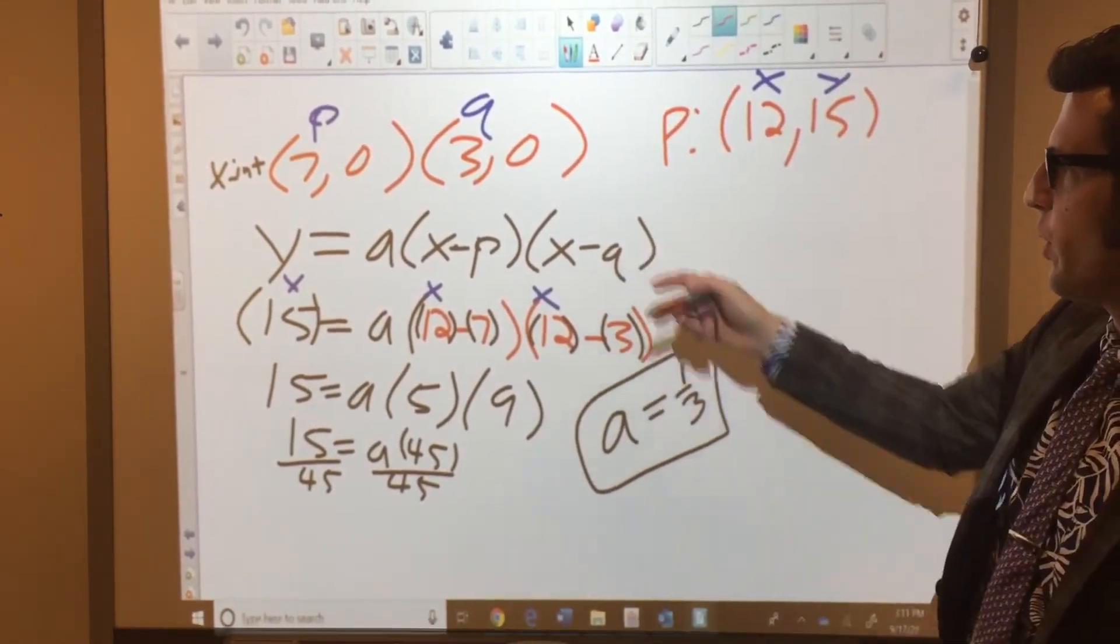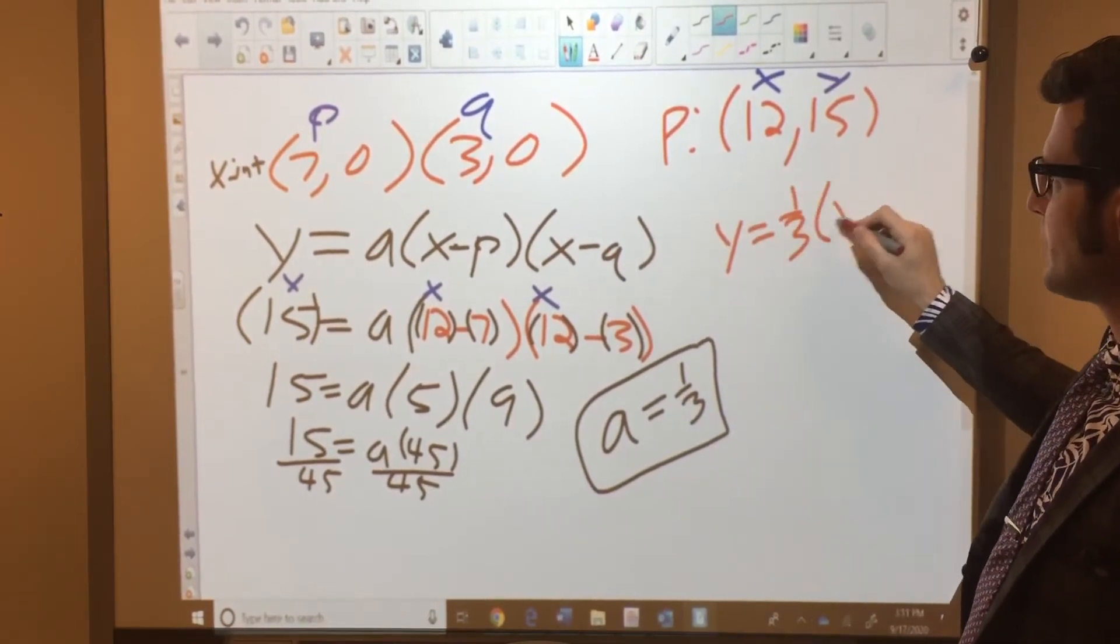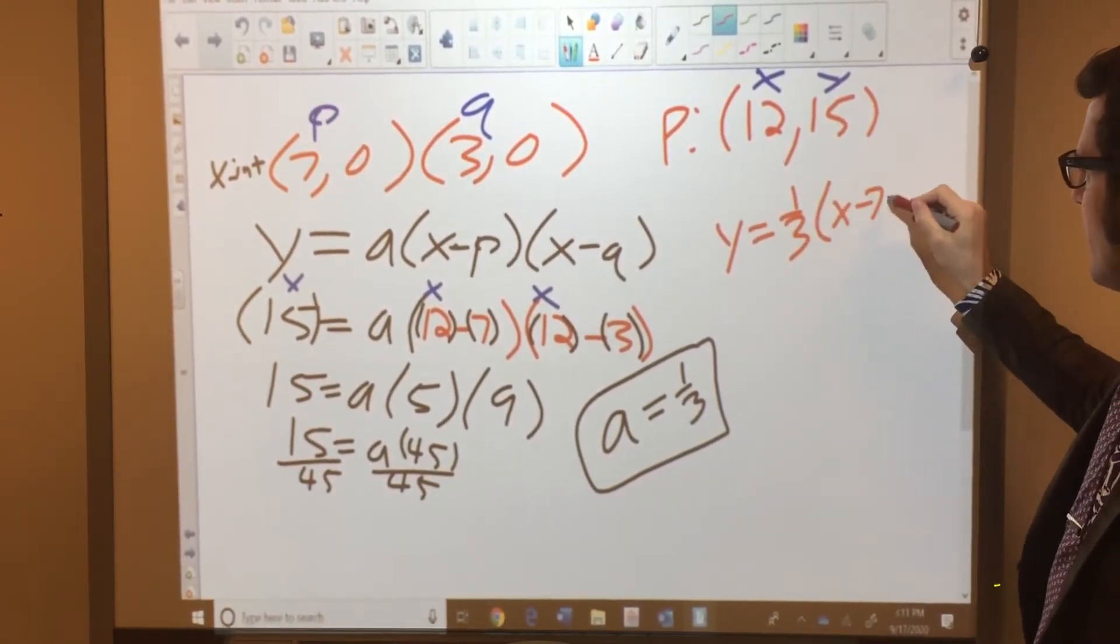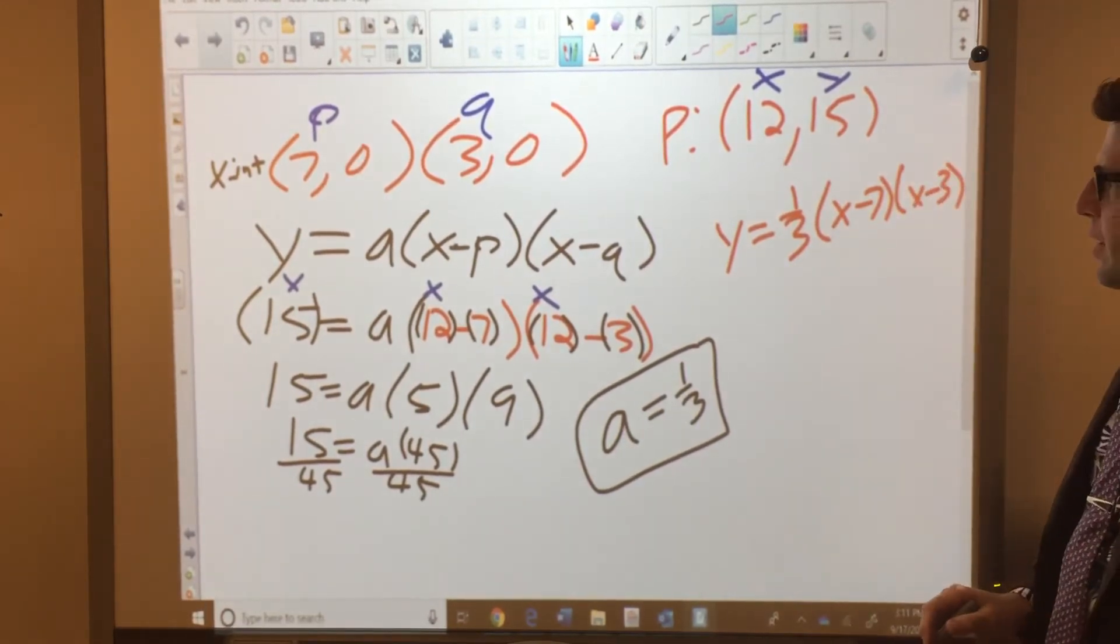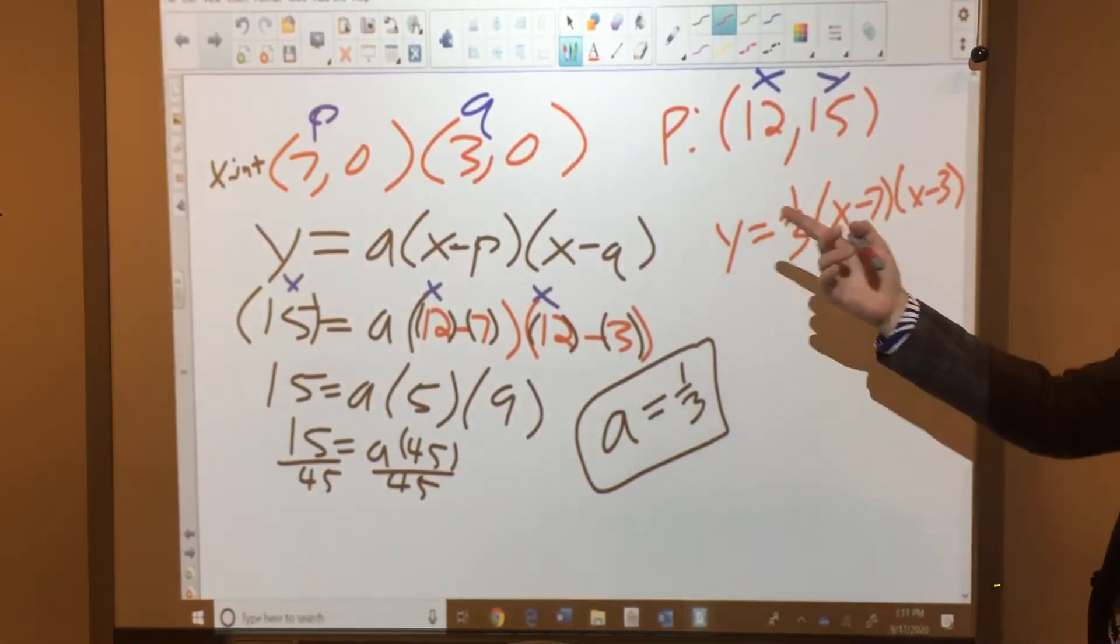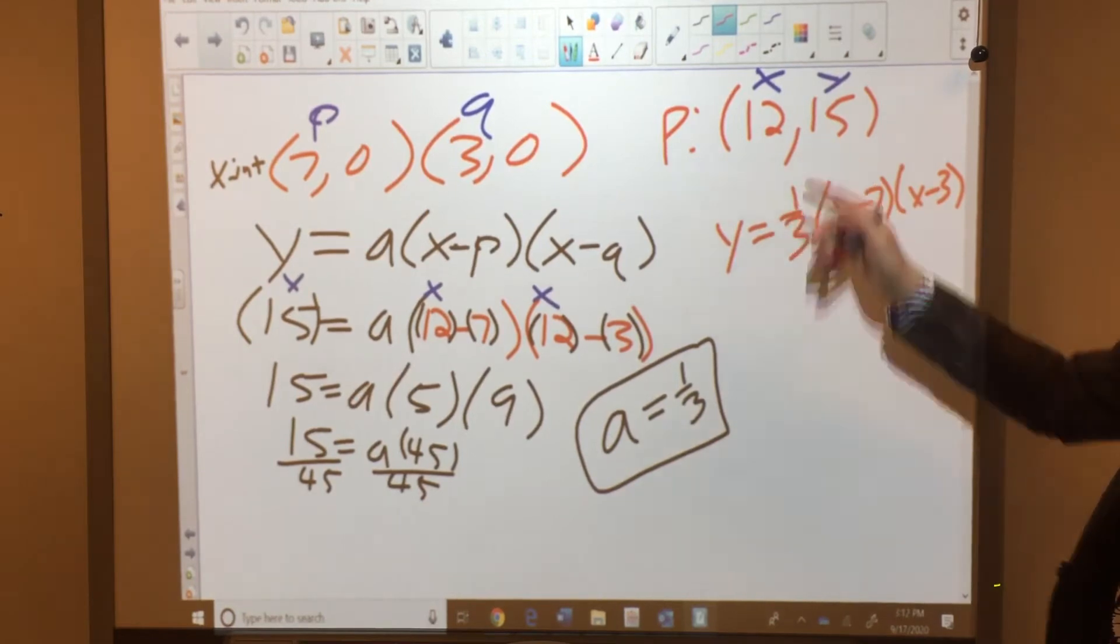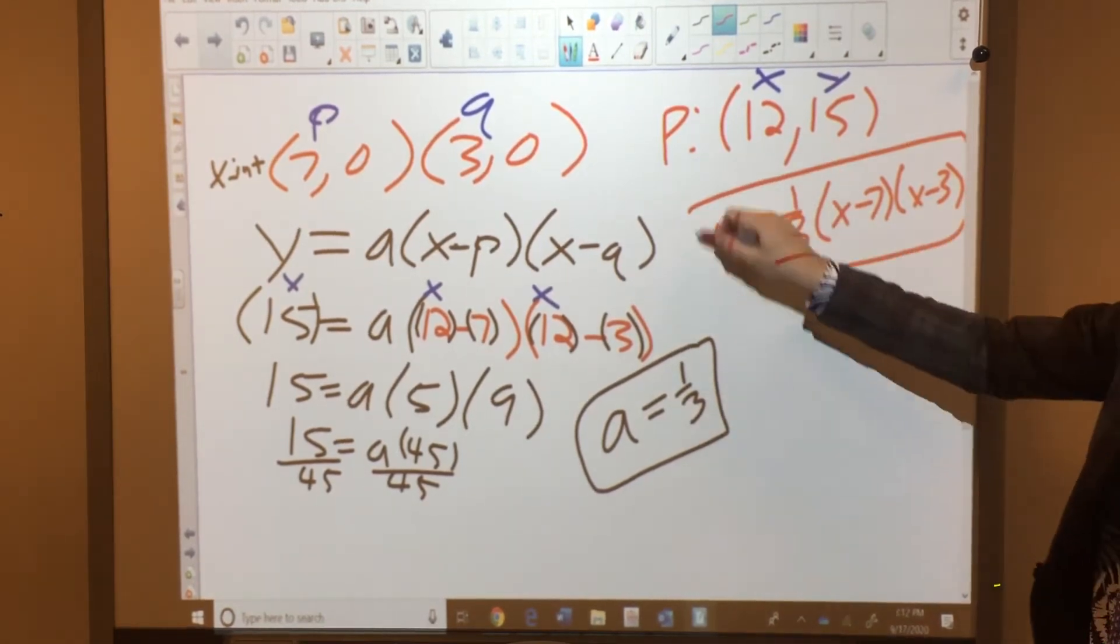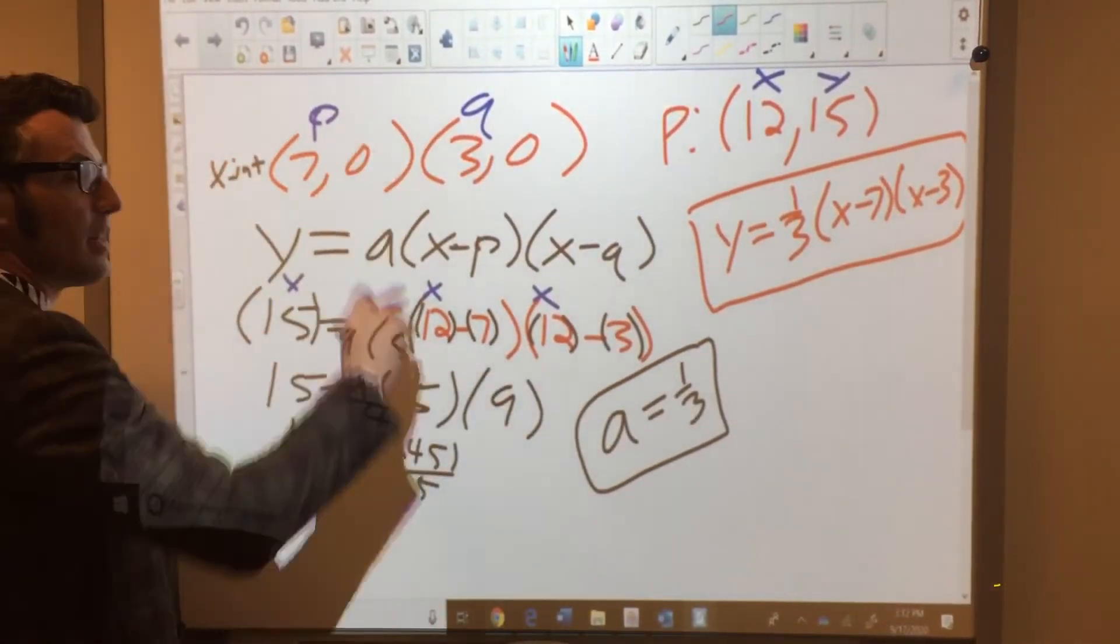So you would rewrite this equation right here as y equals 1 3rd times x minus 7 times x minus 3. And again, if you plug in 12, it should give you 15. We just did the math. 12 minus 7 is 5. 12 minus 3 is 9. That's 45. 1 3rd of 45 is 15. This is the quadratic equation that represents this set of data that we were given.